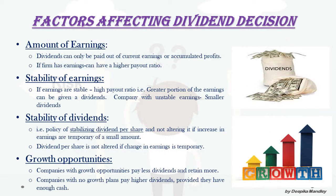The first factor affecting the dividend decision is the amount of earnings. Dividends can only be paid out of current earnings or accumulated profits. If the firm has good earnings, it can have a higher payout ratio. But if the firm does not have earnings, it should retain more as retained earnings rather than distributing dividends.